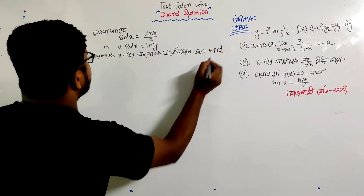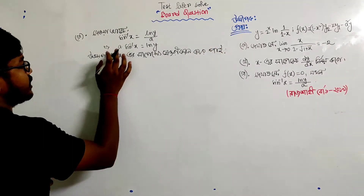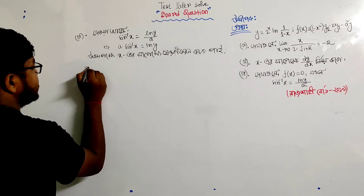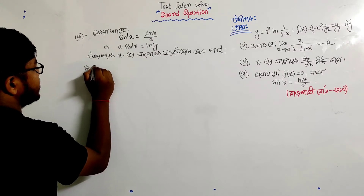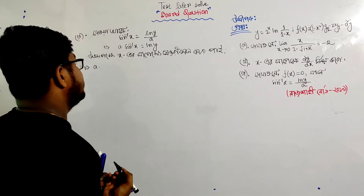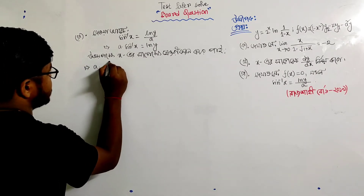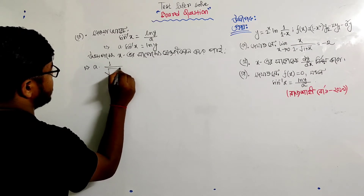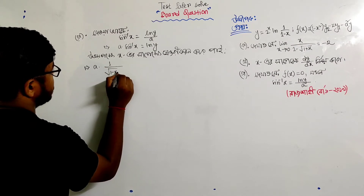So the answer involves a into sin inverse of x, and the derivative is a into sin inverse of x times 1 divided by root of 1 minus x squared.